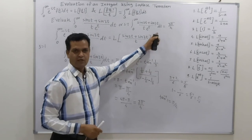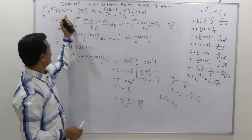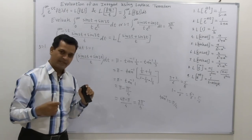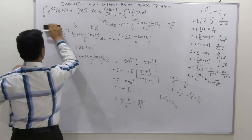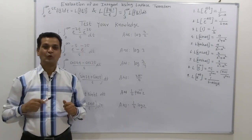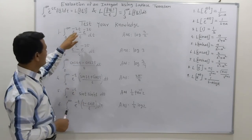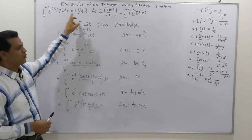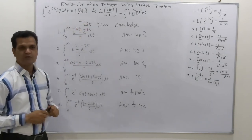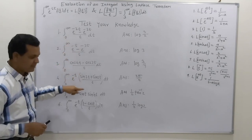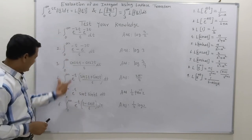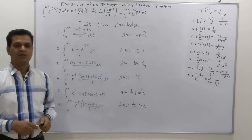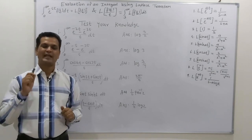This completes the critical example for finding integration using Laplace transformation. With these three examples we stop here. For practice, solve these six exercises — since the limits are zero to infinity and 1/t is present, apply the concept of evaluation of integral using Laplace transformation with the effect of division by t property. Answers are provided so you can verify your results. Thanks and thank you.